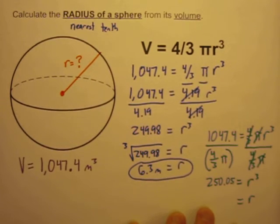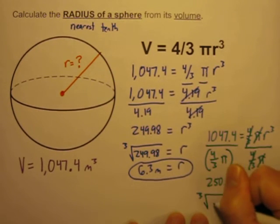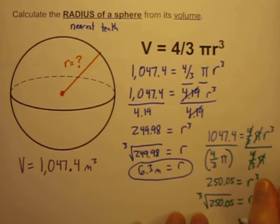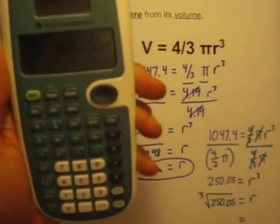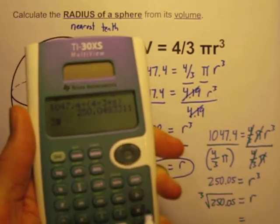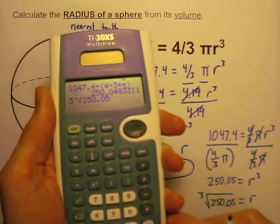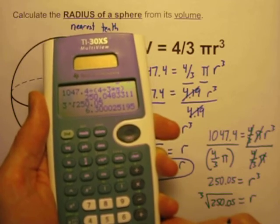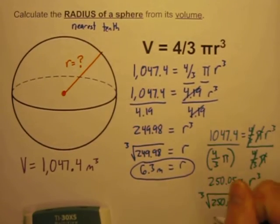And the cube root of 250.05 should get me a number that's still also about 6.3, but if I do the cube root 3, the cube root of 250.05, and that is equal to still 6.3 to the nearest tenth, r is equal to 6.3 meters.